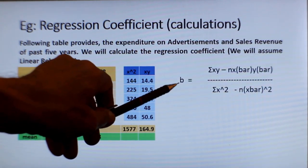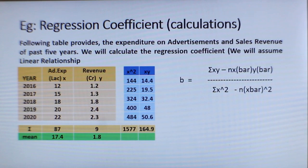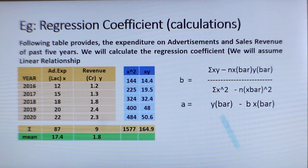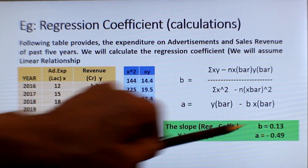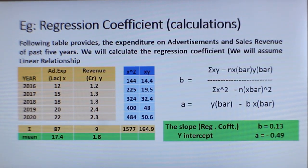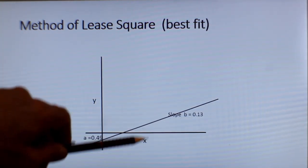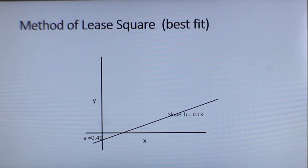The regression coefficient b or the slope is arrived by this formula. Once you substitute these values, you will get that. And a is the y-intercept, and that is given by this formula. If you calculate, the slope is 0.13 and the y-intercept is 0.49. On that graph, it will typically look like this. This is the graph or this is the best fit line for the data that you saw in the previous slide. This is how you arrive at the method of least square.